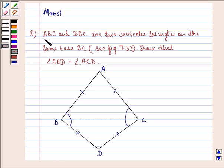The question here says ABC and DBC are two isosceles triangles on the same base BC. See figure 7.33. Show that angle ABD, that is this angle, is equal to angle ACD, that means this angle.